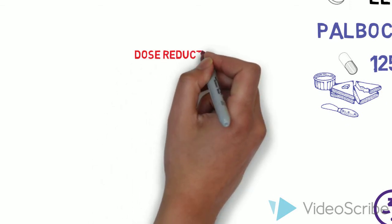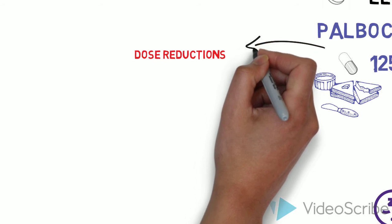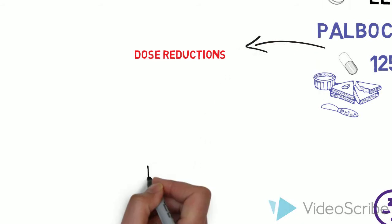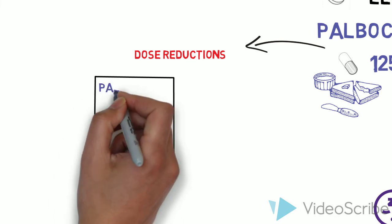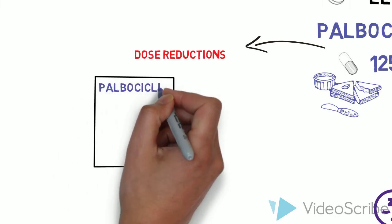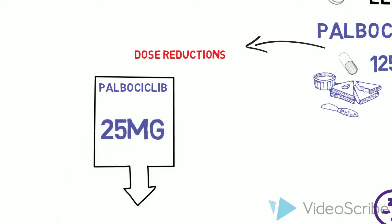Dose reductions are necessary and for palbocyclib, these are in increments of 25mg. Pfizer makes 75mg and 100mg capsules to enable this. Dose reductions mid-cycle would be a problem with this, however, usually this would not be necessary as low neutrophils normally require an interruption to treatment rather than a dose reduction mid-cycle.